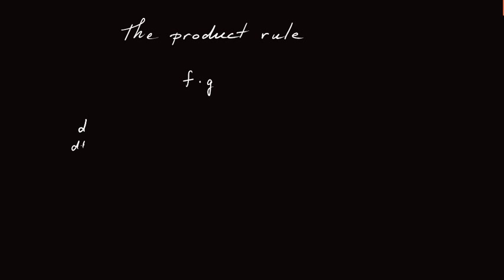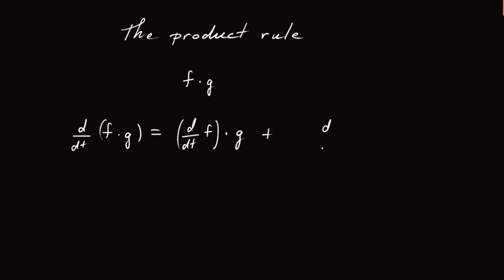If we take the derivative of the product, it's equal to the derivative of f — the rate of change in f — magnified by g. That's the contribution from the rate of change of f, but it's been magnified by g, plus we also have to consider the derivative of g and magnify that by f.